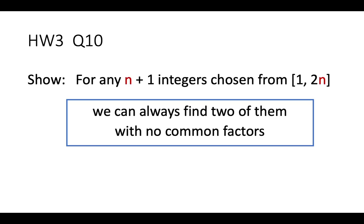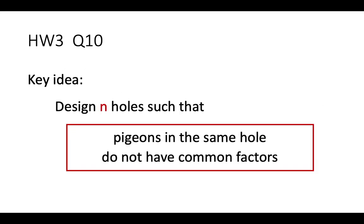We will start with the first question: choosing n plus 1 integers from 1 to 2n. All the problems here are solved using the Pigeonhole Principle. For this problem, the key idea is: we are selecting n plus 1 integers and we want to find two with no common factor. The basic idea is to design n holes such that numbers in the same hole have no common factors. Because we select n plus 1 integers, at least two numbers fall into the same hole.